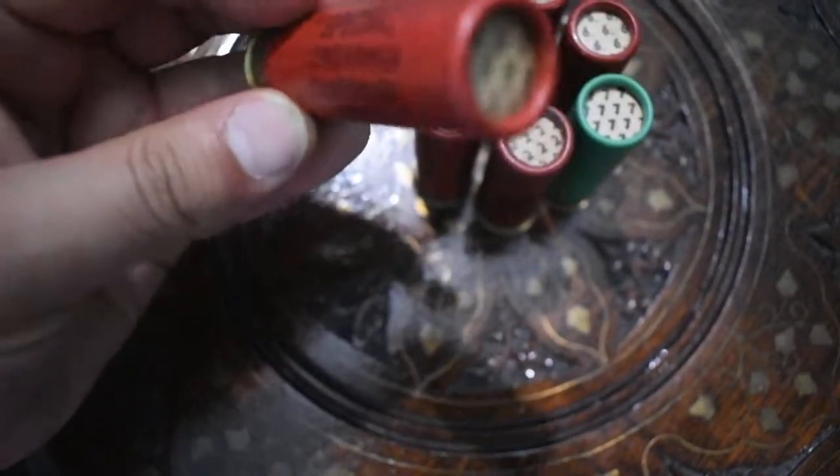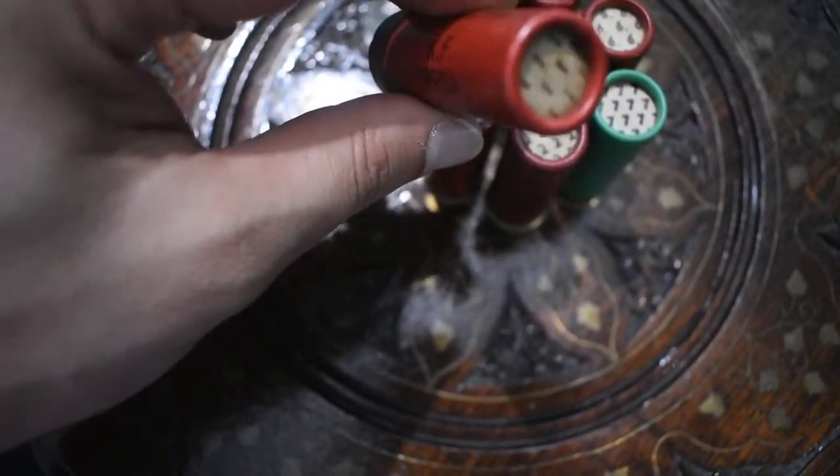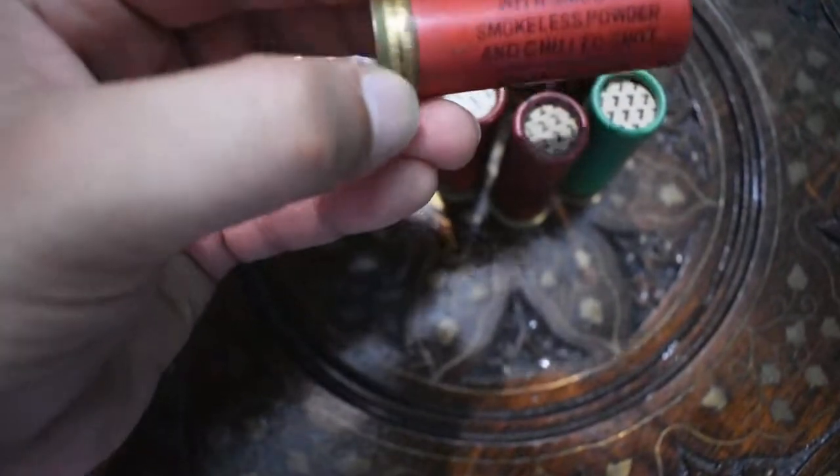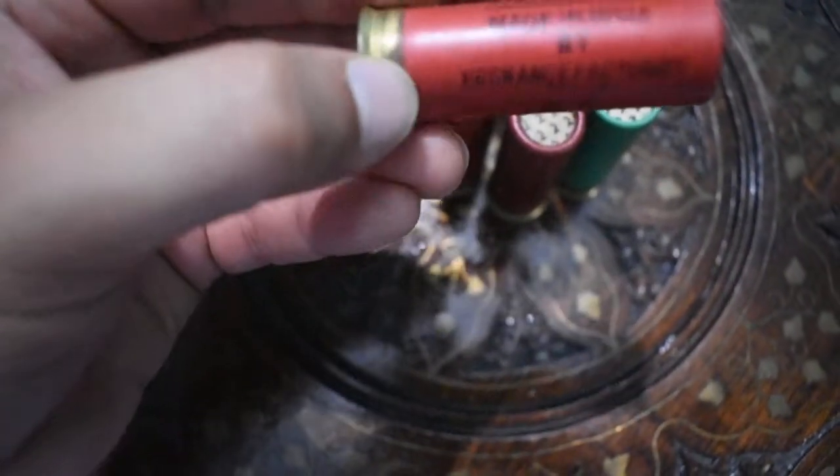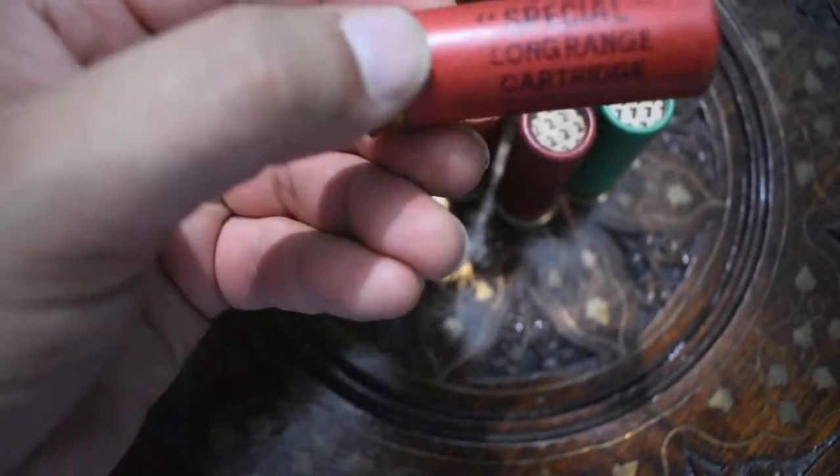Next is again number one, KF special long range cartridge loaded with smooth smugglers powder and chill shot, made in India by Ordnance Factory, KF special.